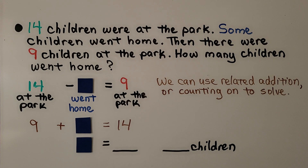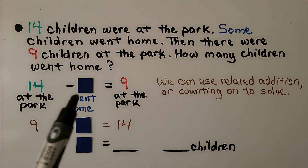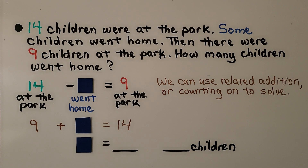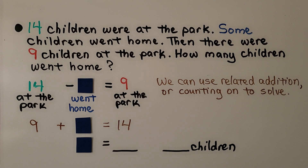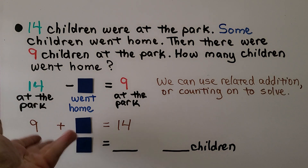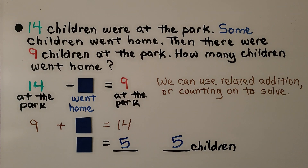14 children were at the park. Some children went home. Then there were nine children at the park. How many children went home? We have 14 children at the park, and then some unknown number went home, leaving nine at the park. We can use related addition or count on to solve: nine plus some number is equal to 14. Starting at nine and counting on — 10, 11, 12, 13, 14 — that's five. Five children went home.